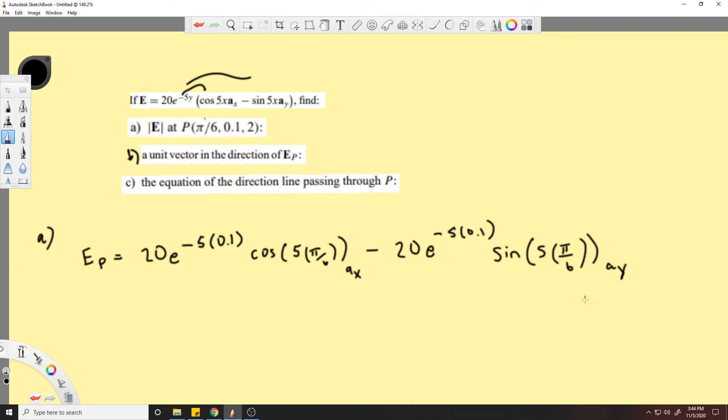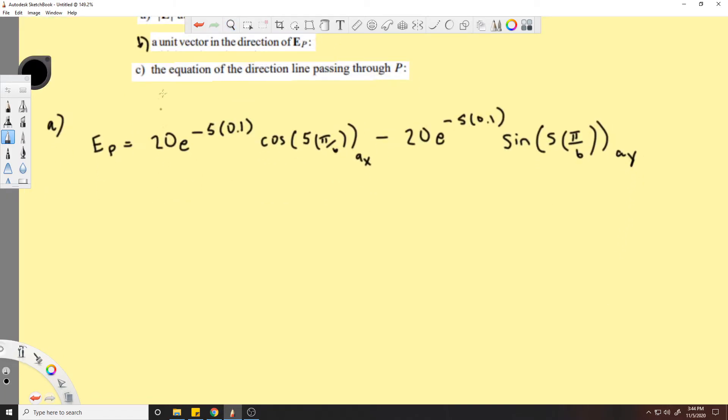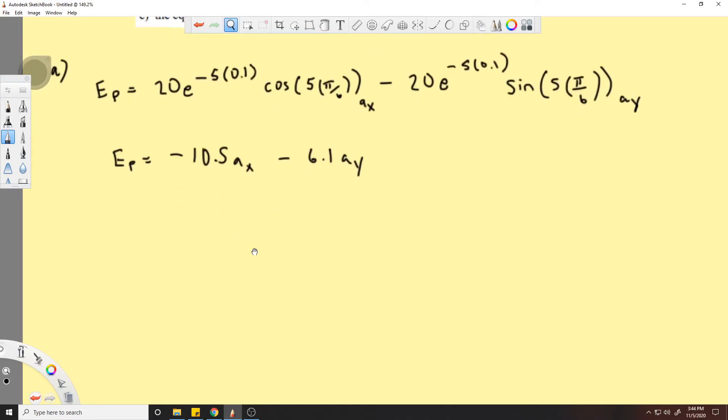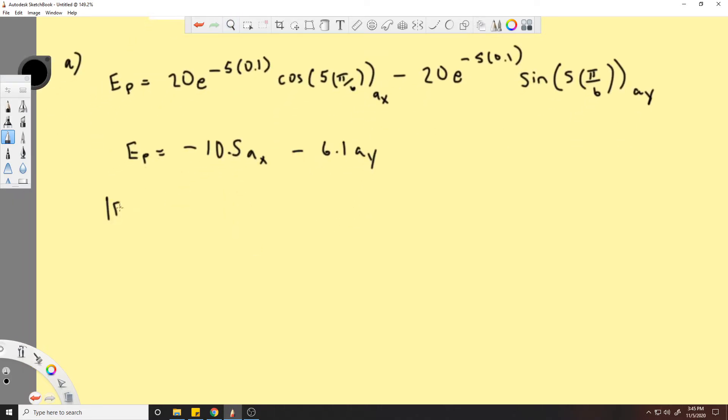So now we have the sine of 5x and that is again 5π/6. And this is in the x direction, this is in the y direction. So really there's no variables or anything, you just put in these numbers in your calculator and do the math and it will result in -10.5 in the x direction.